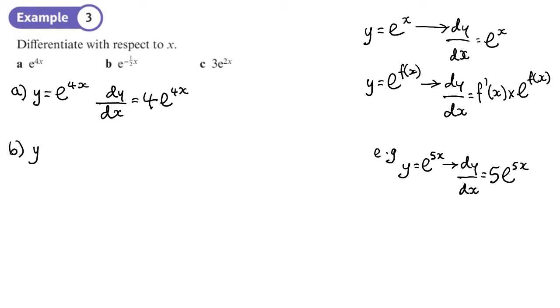The second one, y equals e to the negative half x. Here, f of x is negative 1 half x. That differentiated becomes negative 1 half, and then e to the negative half x. The power doesn't change.